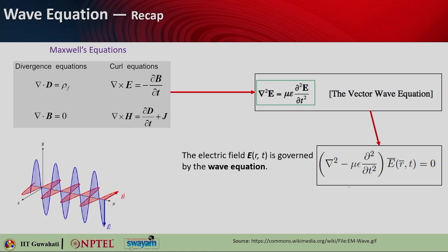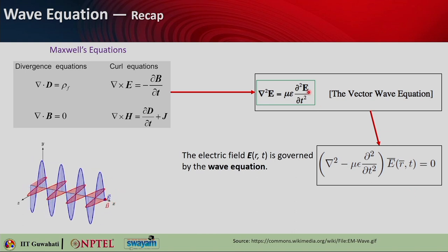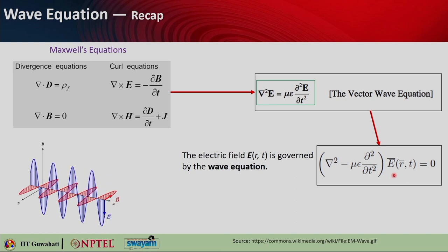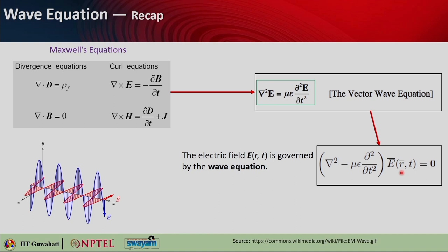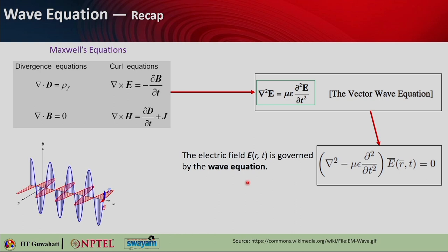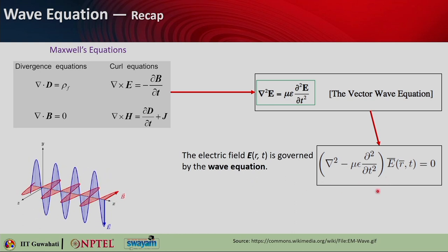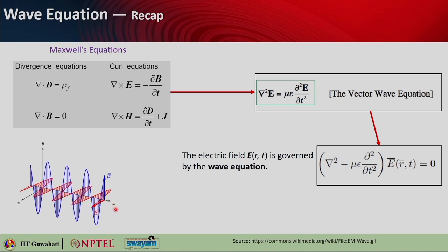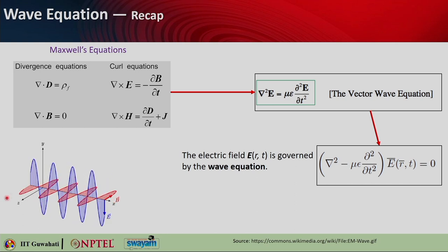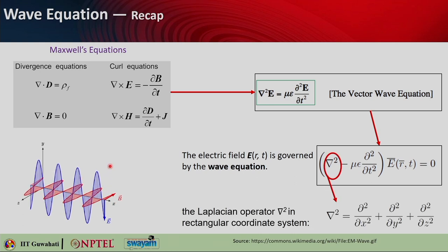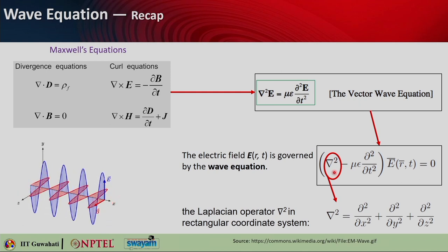This can also be written in alternative notation, explicitly showing that the electric field vector E is a function of position vector r and time t. When both terms are brought to the left-hand side, you get a minus sign. This is the governing equation of the electric field — the wave equation. You can see an electromagnetic wave propagating along the x direction, with the B field oscillating along z and the electric field oscillating along y.